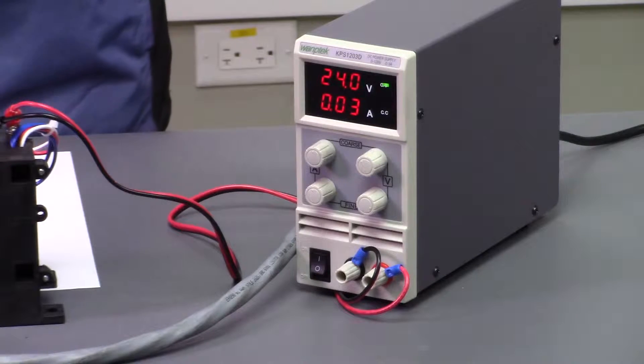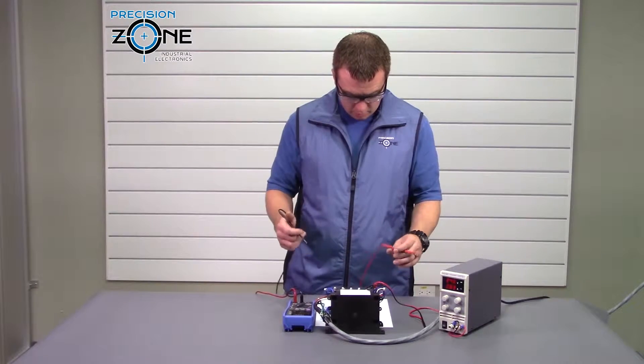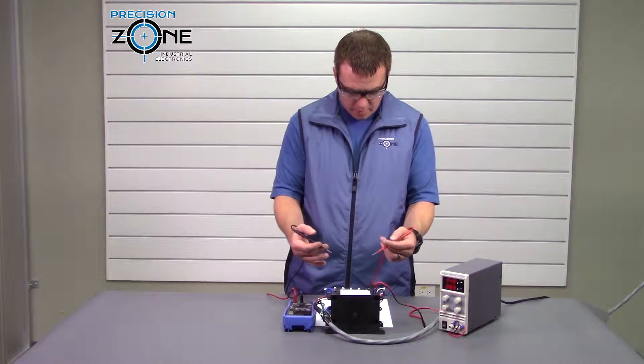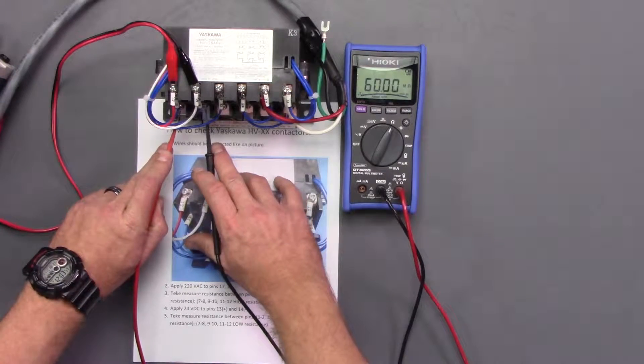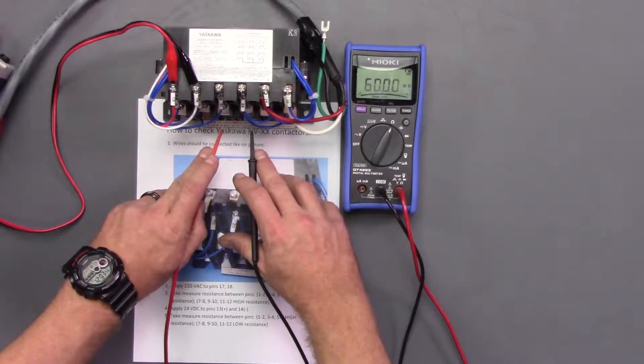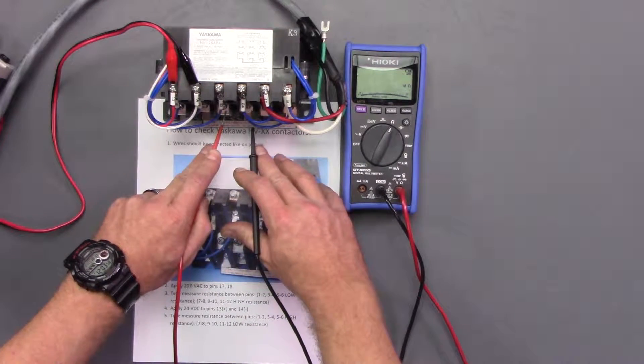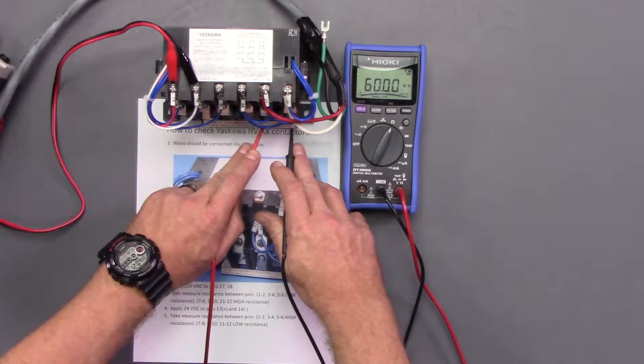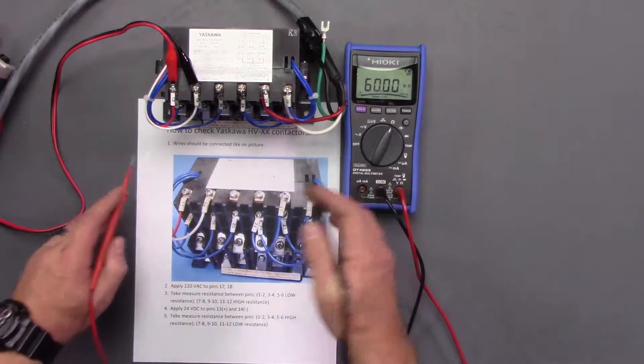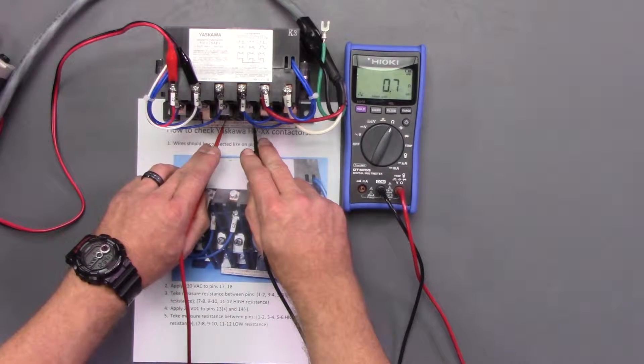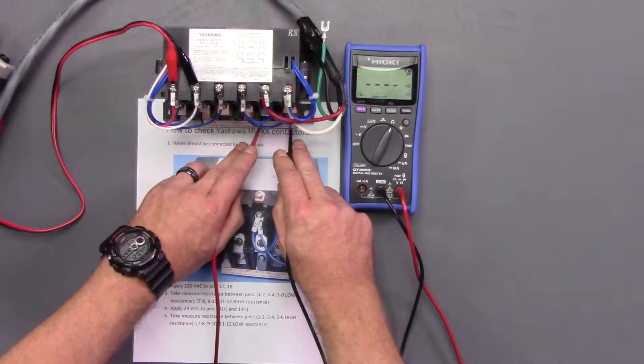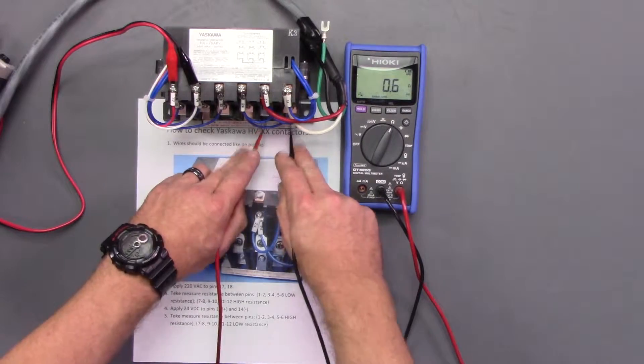Okay, now that the contactor's engaged, everything we checked on the first step will be the exact opposite on the second step. So we're going to go between 1 and 2, nothing, 3 and 4, nothing, 5 and 6, nothing. And then these should all be shorted. Which they are.